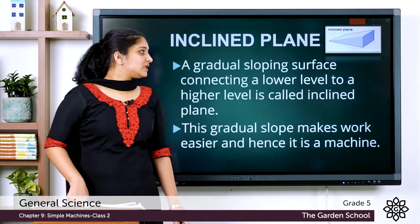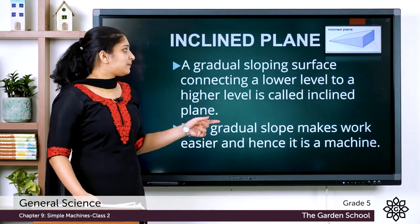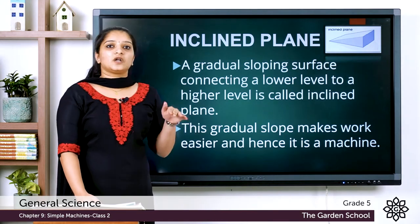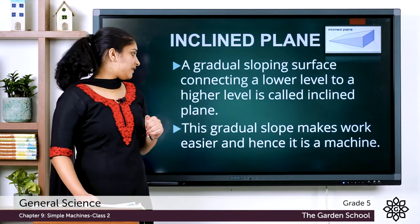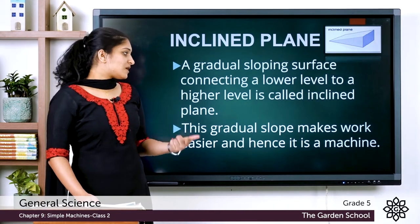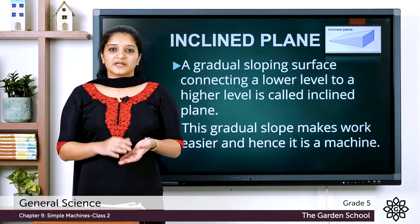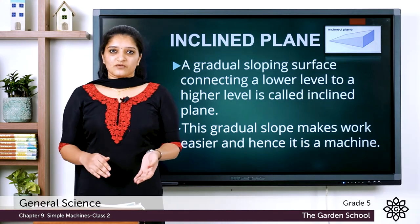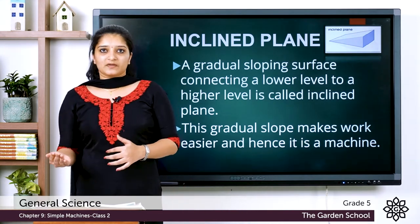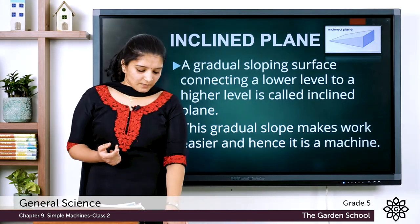First, let's see what an inclined plane is. An inclined plane is a gradual sloping surface connecting a lower level to a higher level. This gradual slope makes work easier, and hence it is considered a machine.